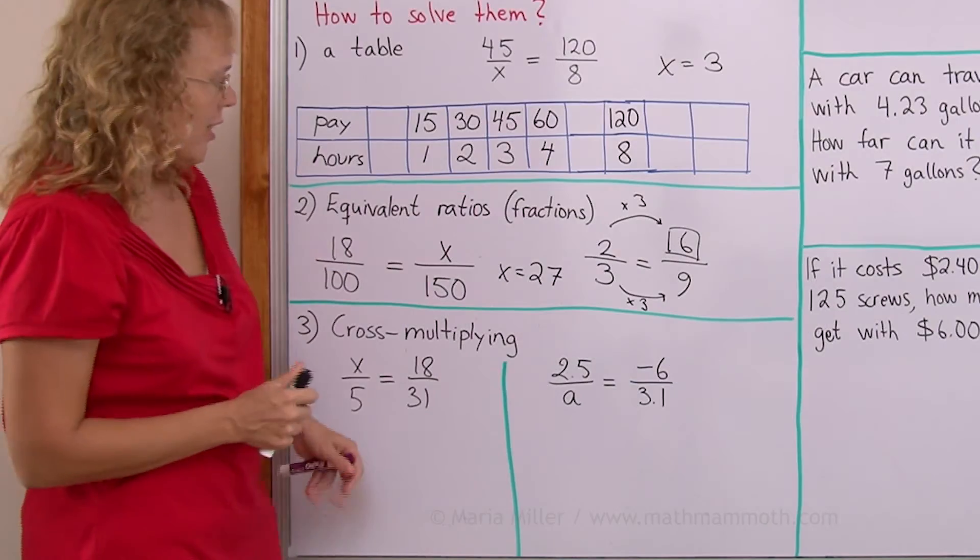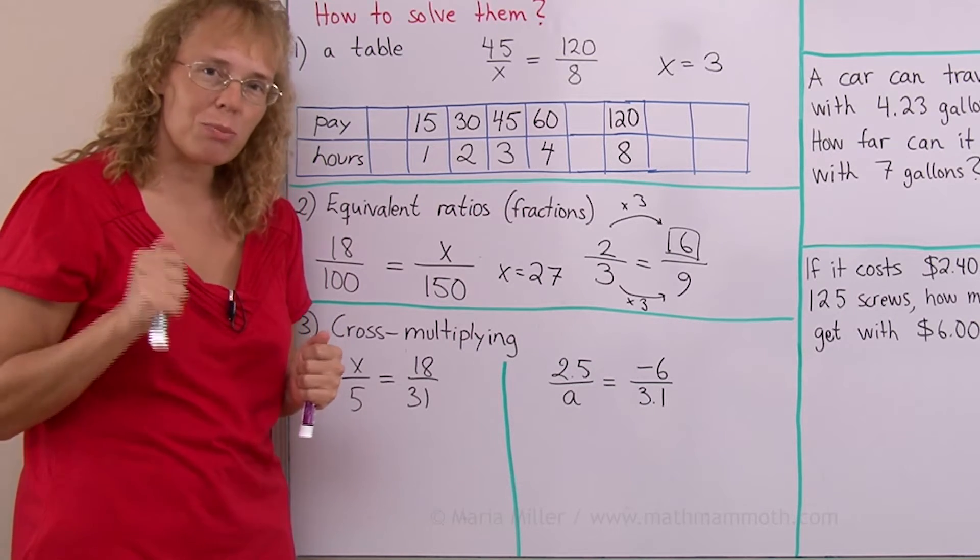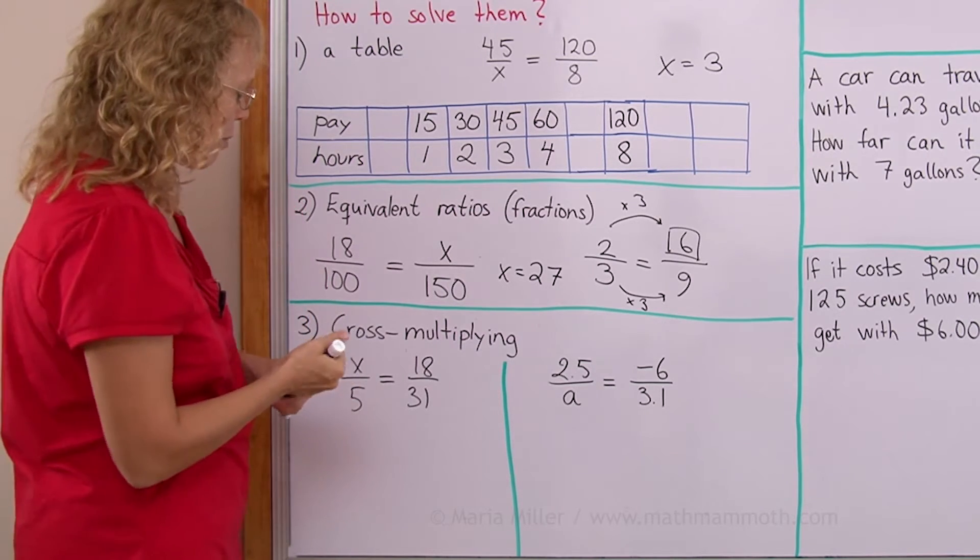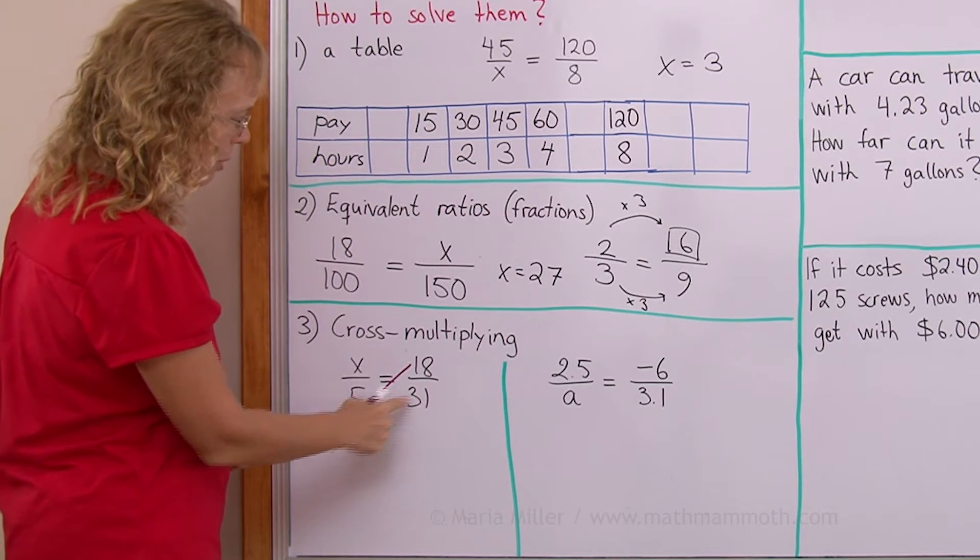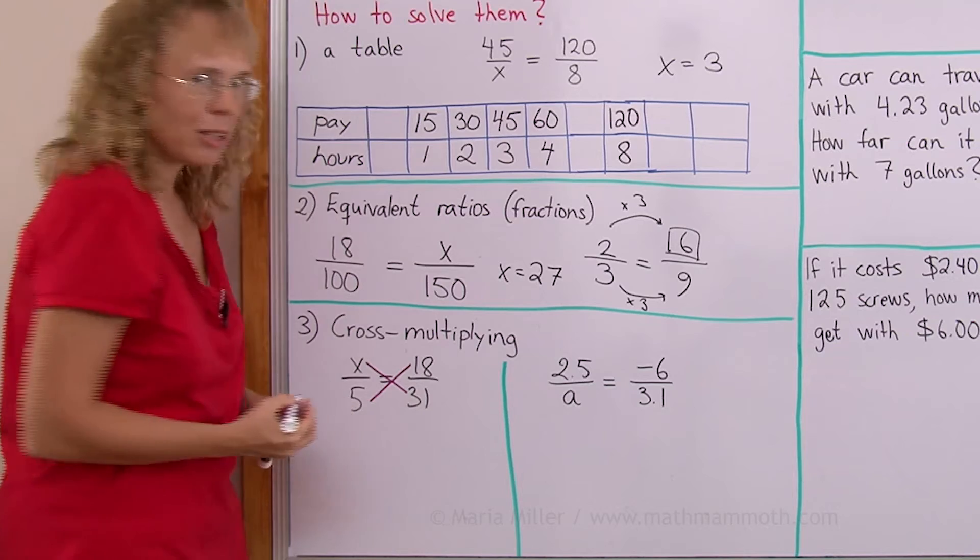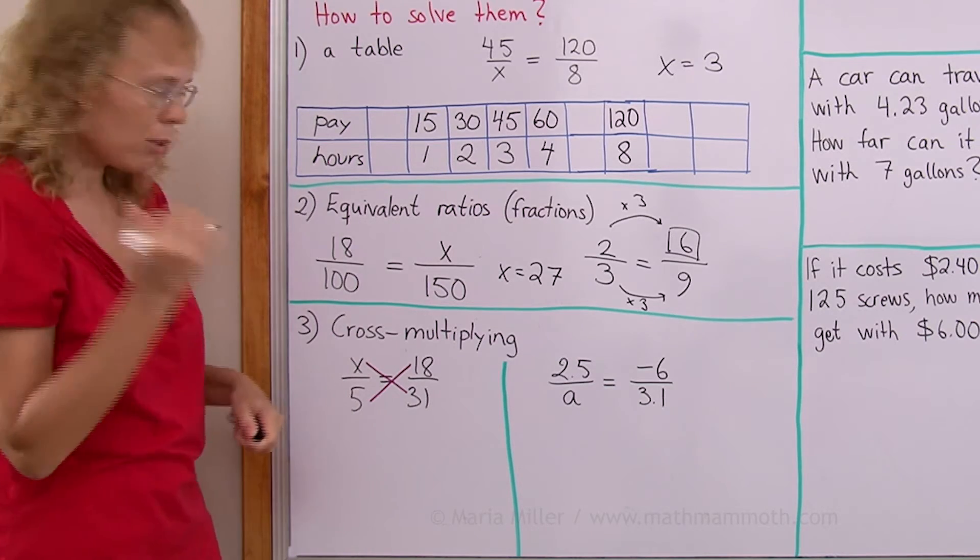And now lastly, the main way to solve proportion is by cross multiplying. Now that means that we multiply crisscross. 5 gets multiplied by 18 and then x gets multiplied by 31. And those are equal.